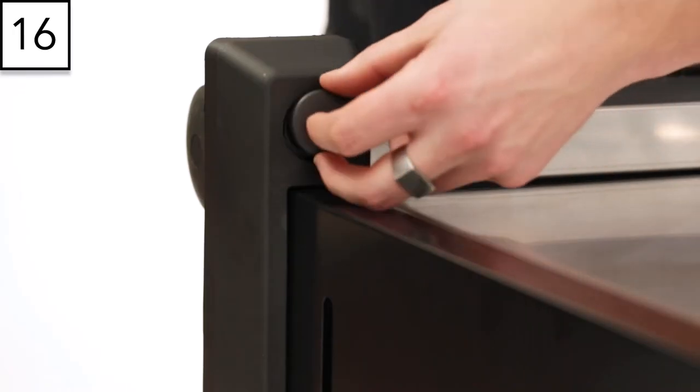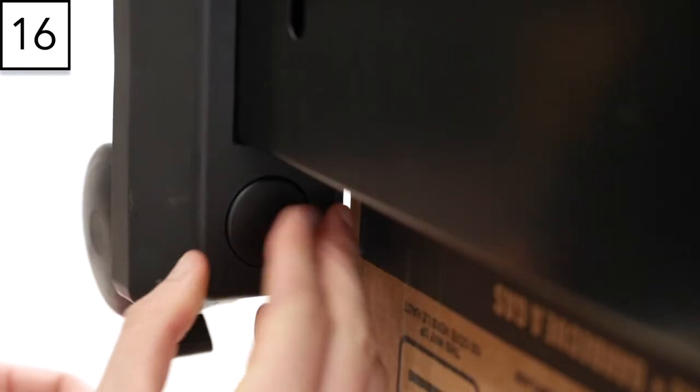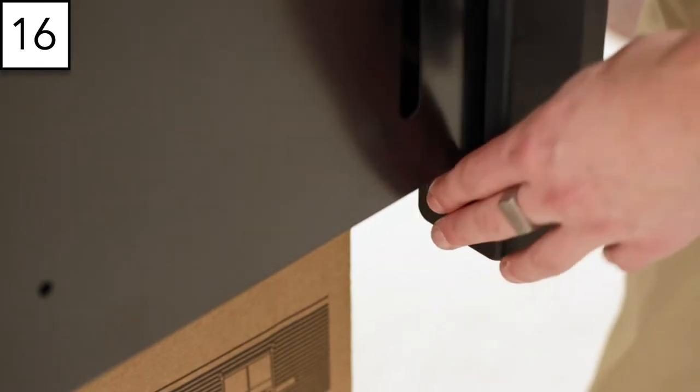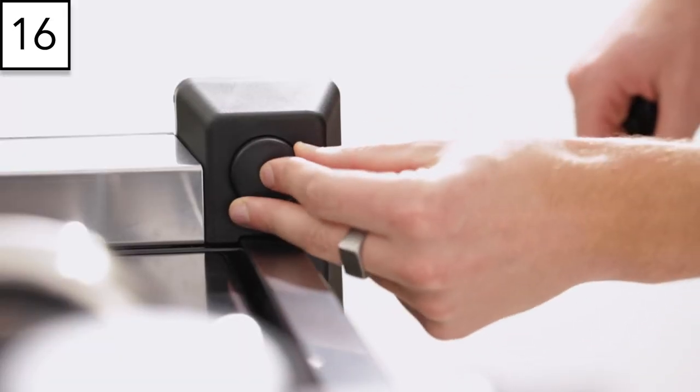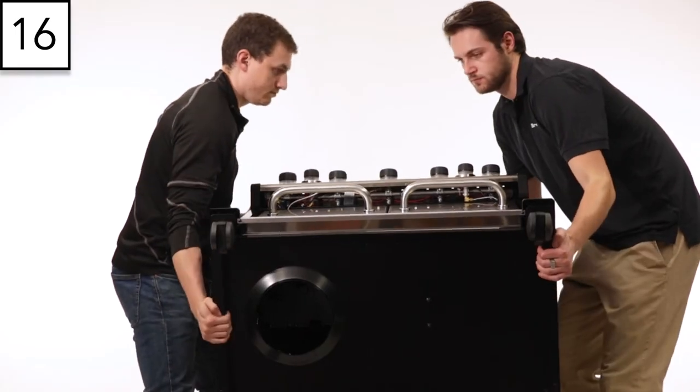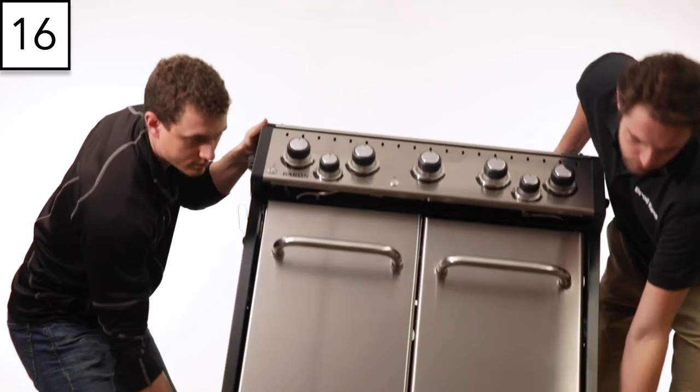Add the four black caps to the top of the caster bracket. With the help of a friend, stand your Baron BBQ upright.